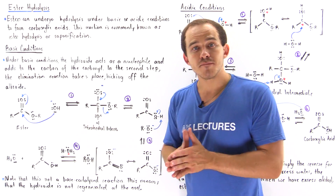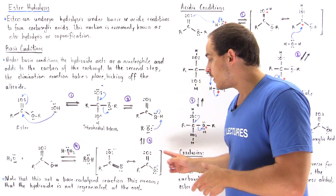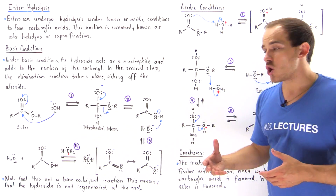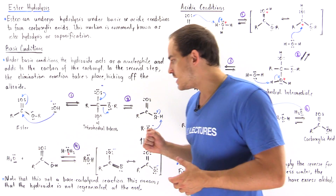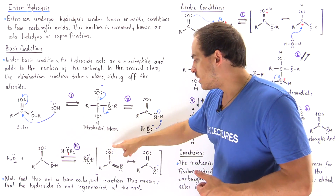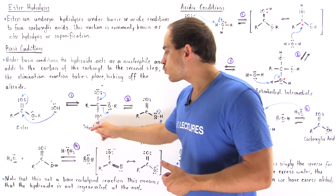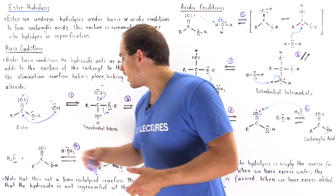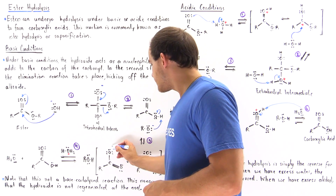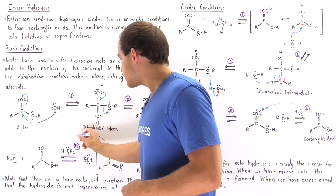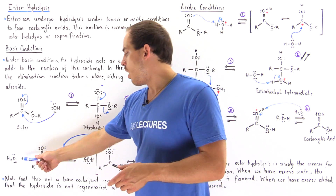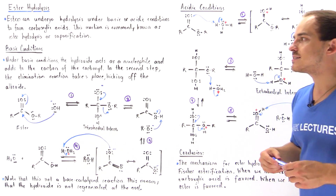To actually form the final carboxylic acid product from this carboxylate ion, we have to react it with hydronium — we add acid. This pair of electrons basically grabs an H atom off of our hydronium, and we form the final product, our carboxylic acid, as well as water. In the final step, this grabs an H, kicking off these two electrons onto our oxygen, forming the water as well as our carboxylic acid.